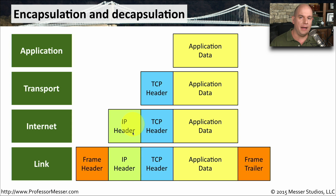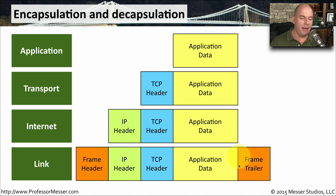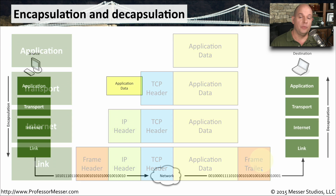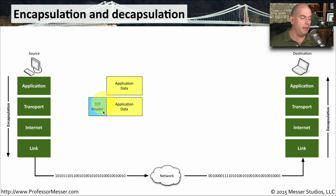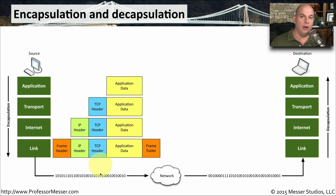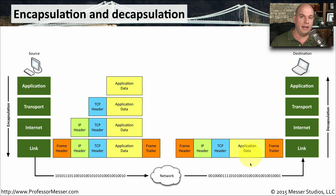Now we have a link layer that needs to put link information onto this. It encapsulates a frame header and a frame trailer, and is now able to send all of this information across the network. If we expand out this process and look at it from both sides of the conversation, we have application data that starts on the source device, and we begin encapsulating it within the header information for transport, internet, and link. It is then sent across the network to the other side.